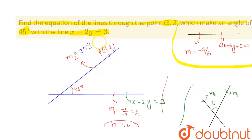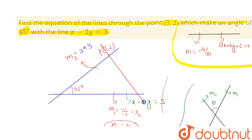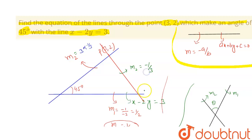So the line for m2 equals 3 passes through point (3, 2) at one angle, and the line for m2 equals minus one-third passes through the same point at the other angle, both making 45 degrees with the given line. Thank you.